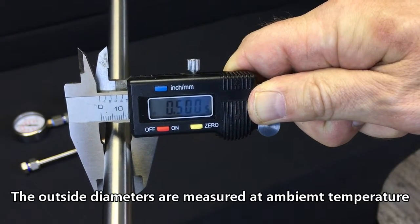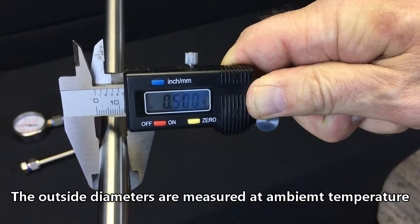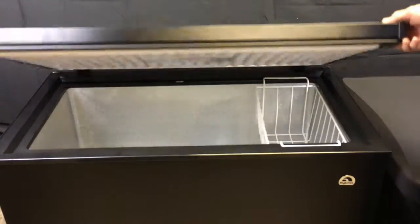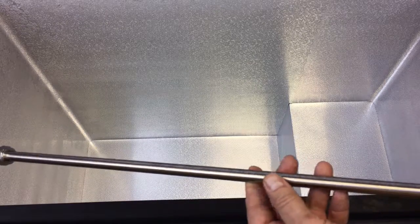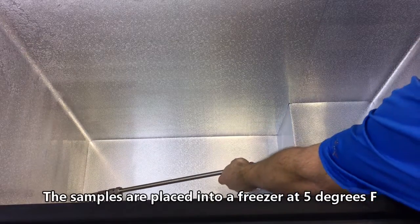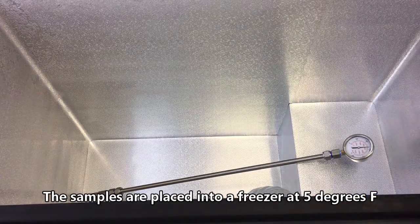This tubing sample begins with 0.5 inches of outside diameter average. Now, let the freezing begin. The tube samples are inserted into a freezer at 5 degrees Fahrenheit.